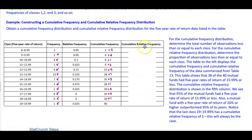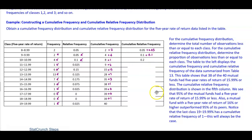Now let's look at the cumulative relative frequency. The first value is 0.05. We add the second relative frequency of 0.05, giving us 0.10. The next value is 0.10, so 0.10 plus 0.10 gives us 0.20. The next value we add is 0.025, so 0.20 plus 0.025 gives us 0.225.